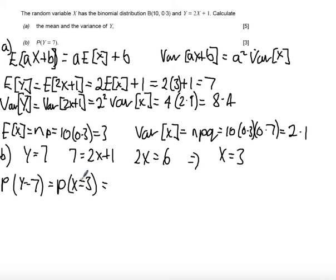As it equals this value, I'm not going to bother using the tables—I'm just going to use the binomial formula. So it's n choose 3, which is 10 choose 3, times the probability of success, 0.3, to the power of 3, times the probability of failure, 0.7, to the power of 7.